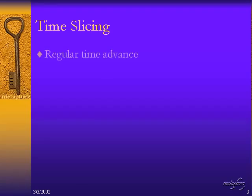Now let's look at key methods for model execution. The first is called time slicing, also called fixed increment time advance. Time slicing involves a regular time advance — it means that time will advance as a variable in equal delta times. Delta t can change, but it changes in a regular fashion. This is frequently used for continuous time systems where the system is built from differential equations.